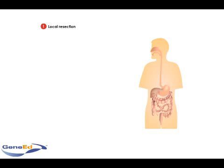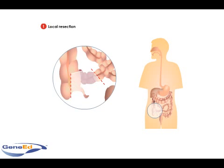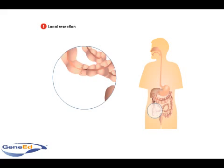Local resection involves removing one or more pieces of the alimentary canal that is or are severely affected by Crohn's disease. The remaining parts are joined together. The indications for local resection include intestinal obstruction, hemorrhage, and stricture.